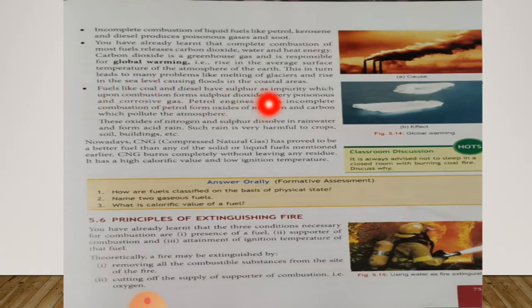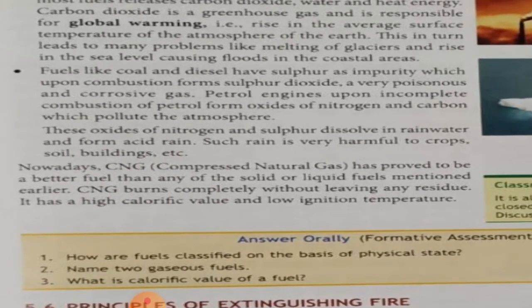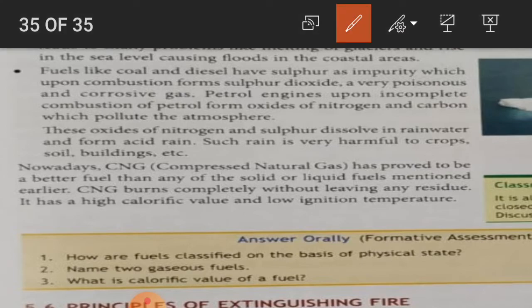Point 4: Fuels like coal and diesel have sulfur as an impurity, which upon combustion forms sulfur dioxide, a very poisonous and corrosive gas. Petrol engines upon incomplete combustion of petrol form oxides of nitrogen and carbon which pollute the atmosphere. These oxides of nitrogen and sulfur dissolve in rain water and form acid rain. Such rain is very harmful to crops, soil, and buildings. Underline the word corrosive, which means destructive.